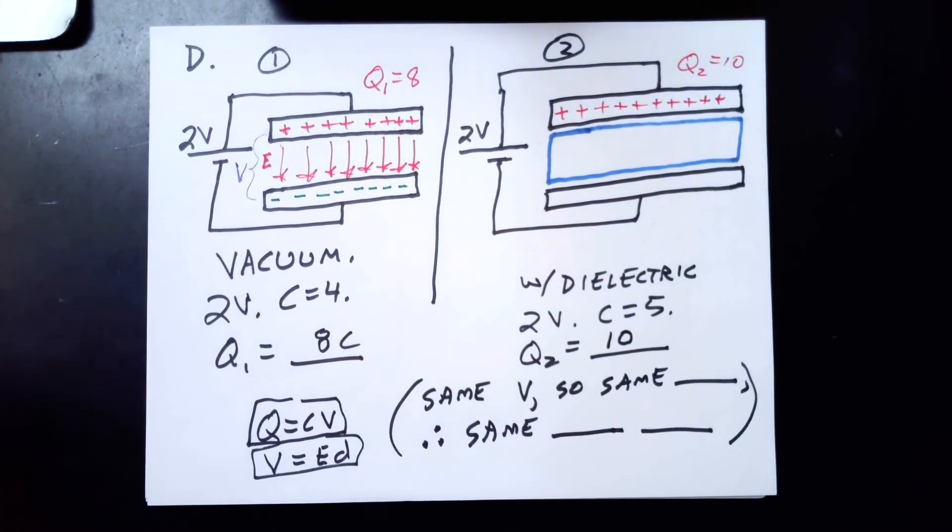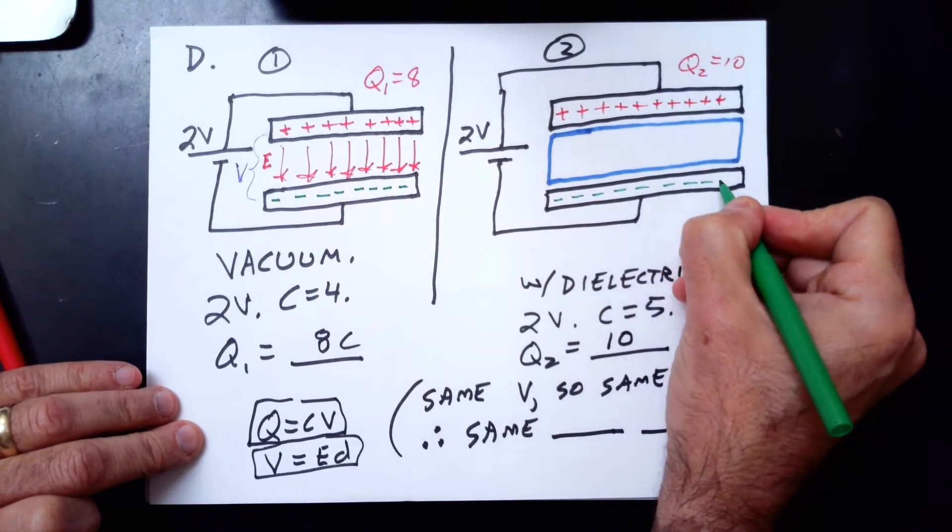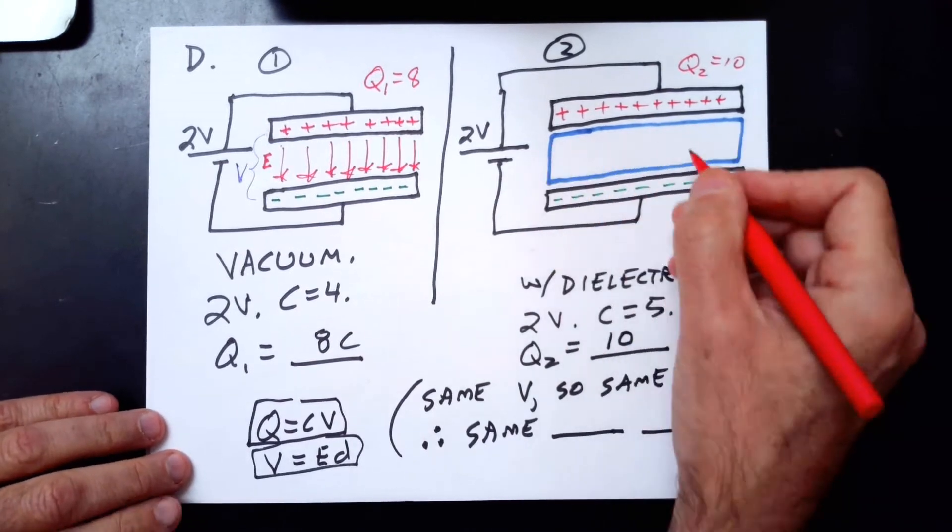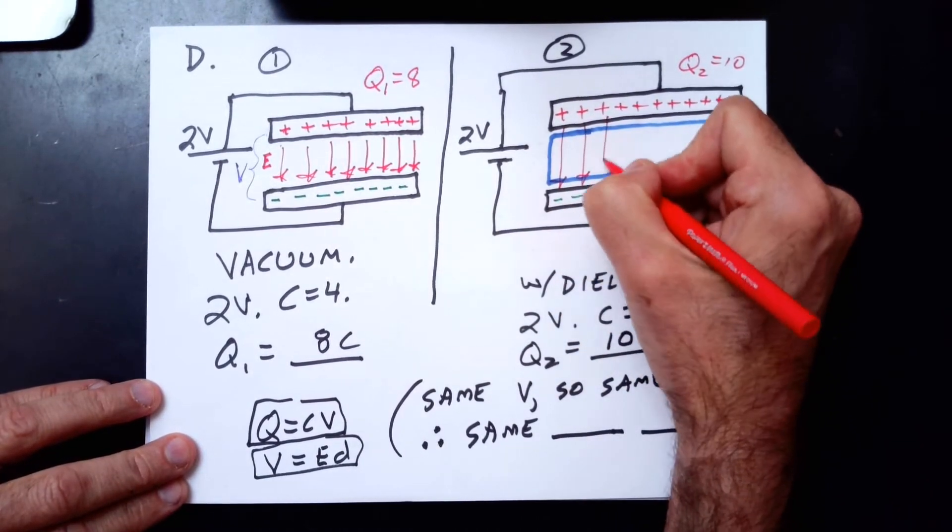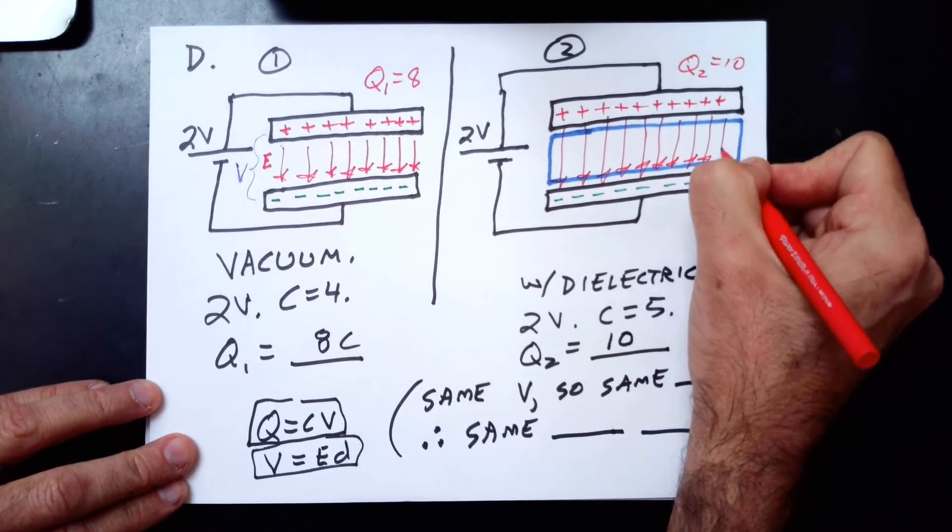If there were no dielectric, how many electric field lines should I draw? I would draw 10.